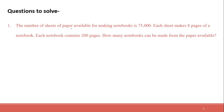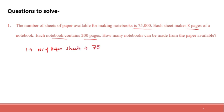The first question for today: the number of sheets of paper available for making a notebook is 75,000. Each sheet makes 8 pages of a notebook. Each notebook contains 200 pages. How many notebooks can be made from the paper available? First, let's note: number of paper sheets available are 75,000, each sheet makes 8 pages.